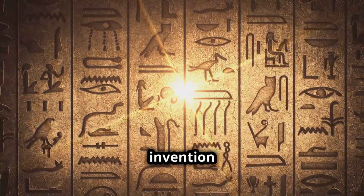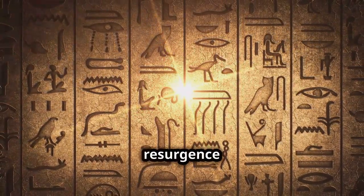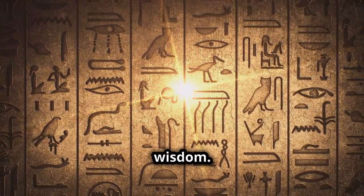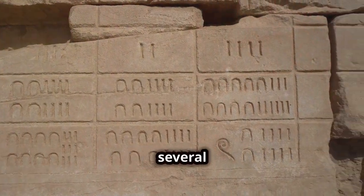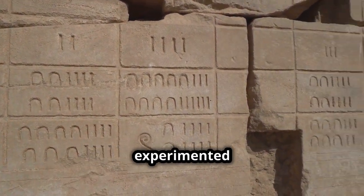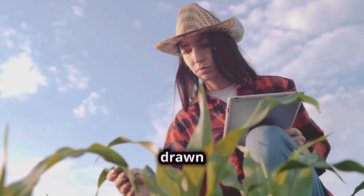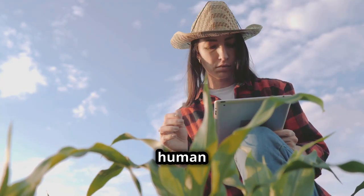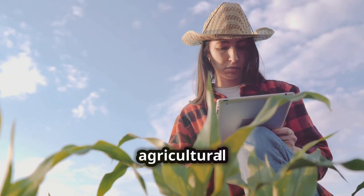The nonary system isn't a new invention but rather a resurgence of ancient wisdom. Historical records suggest that several early civilizations might have experimented with base-nine systems, drawn by its natural alignment with human gestational periods and agricultural cycles.